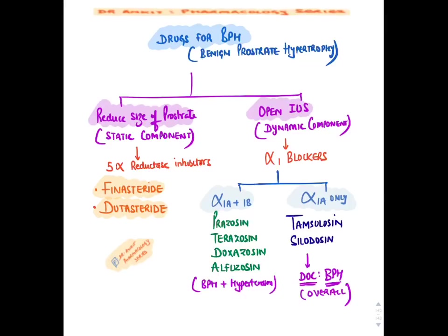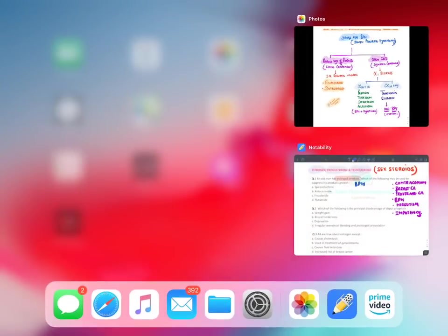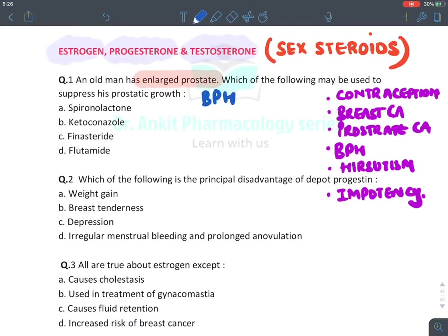The second goal is to open the internal urethric sphincter, which is closed by alpha-1 sympathetic receptors. We use alpha-1 blockers — specifically alpha-1a+b blockers like prazosin, terazosin, doxazosin, and alfuzosin (ending in 'zosin') if hypertension accompanies BPH. For BPH alone, we give tamsulosin, which is the drug of choice. The definitive treatment is surgery — TURP (trans-urethral resection of prostate). The answer here is finasteride.